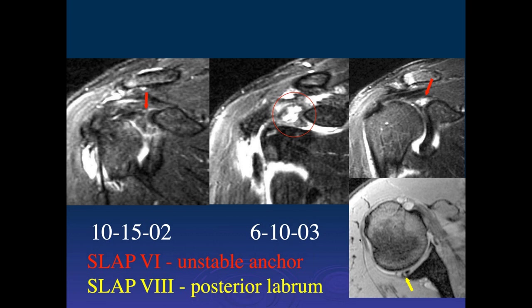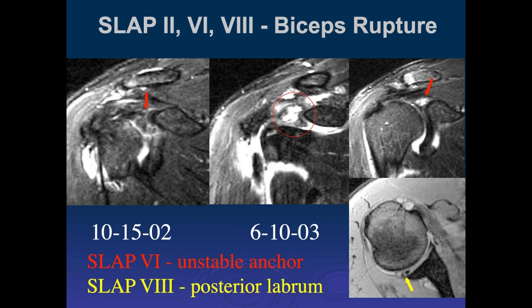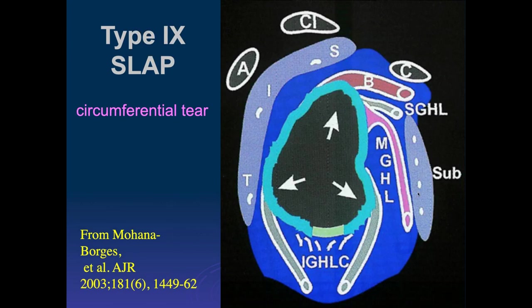As the long head of the biceps begins to fray, it eventually ruptures and slides out of the groove. In a normal individual the biceps does not slide at all, but once it starts to fray and tear it can slide. Eventually it tears away from the anchor attachment.